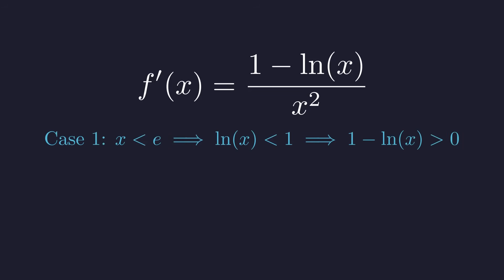When x is less than e, the natural log of x is less than 1. So 1 minus that quantity is positive. A positive derivative means the function is climbing upward as we approach e from the left.